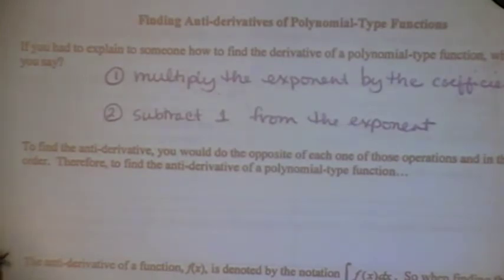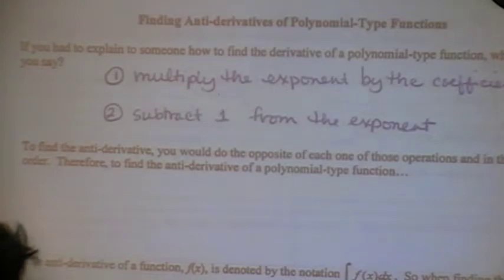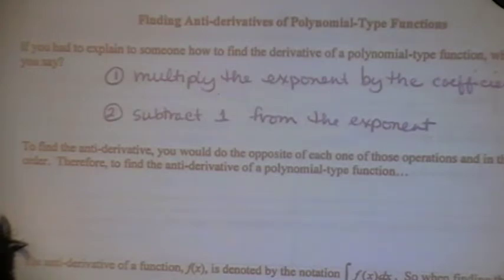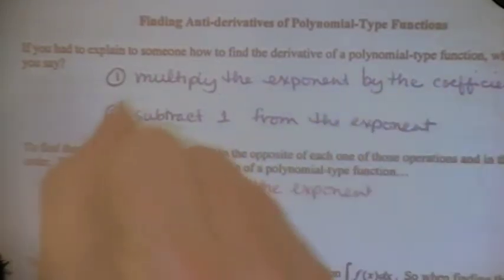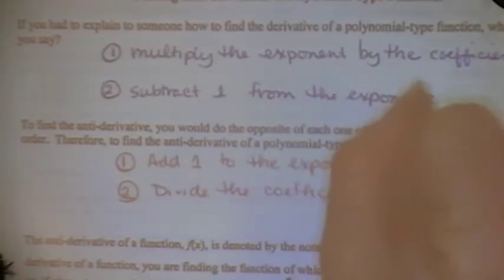And then subtract one — that's the power rule in a nutshell, and we do it all the time. So in order to find an anti-derivative, you do the opposite of that: you divide and add. But we have to do it in the complete reverse order. The first step of an anti-derivative is to add one to the exponent, and then you're going to divide the coefficient by the new power.